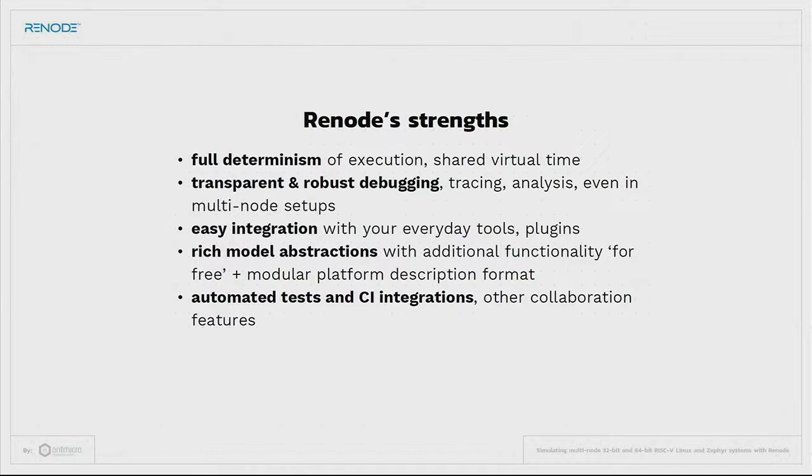What we think is good with Renode — the most important aspects are listed here — we're fully deterministic. We can run big setups with one virtual time domain that is shared between all of them. We have very good debugging capabilities; we can do it transparently to the software. We integrate easily because we're just an open source tool, so you can bundle it with whatever you're doing and you're free to experiment. We have very good model abstractions and a platform description format that we think matches RISC-V very well, and we also integrate well with CI systems and testing automation, which we think is, of course, crucial.